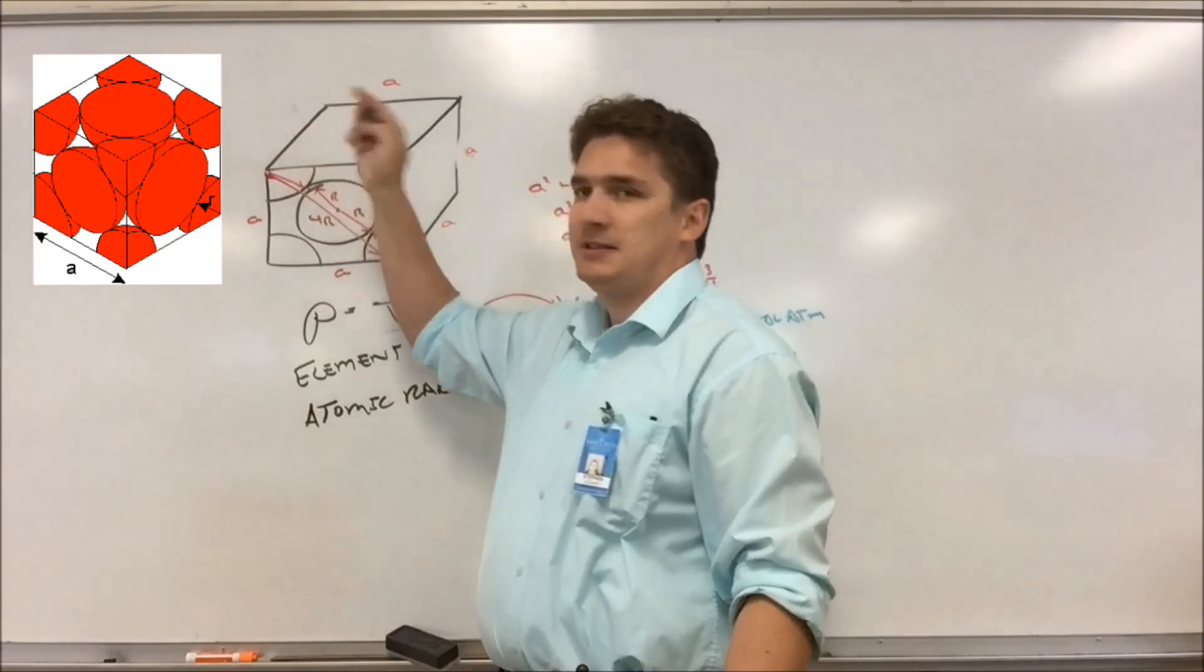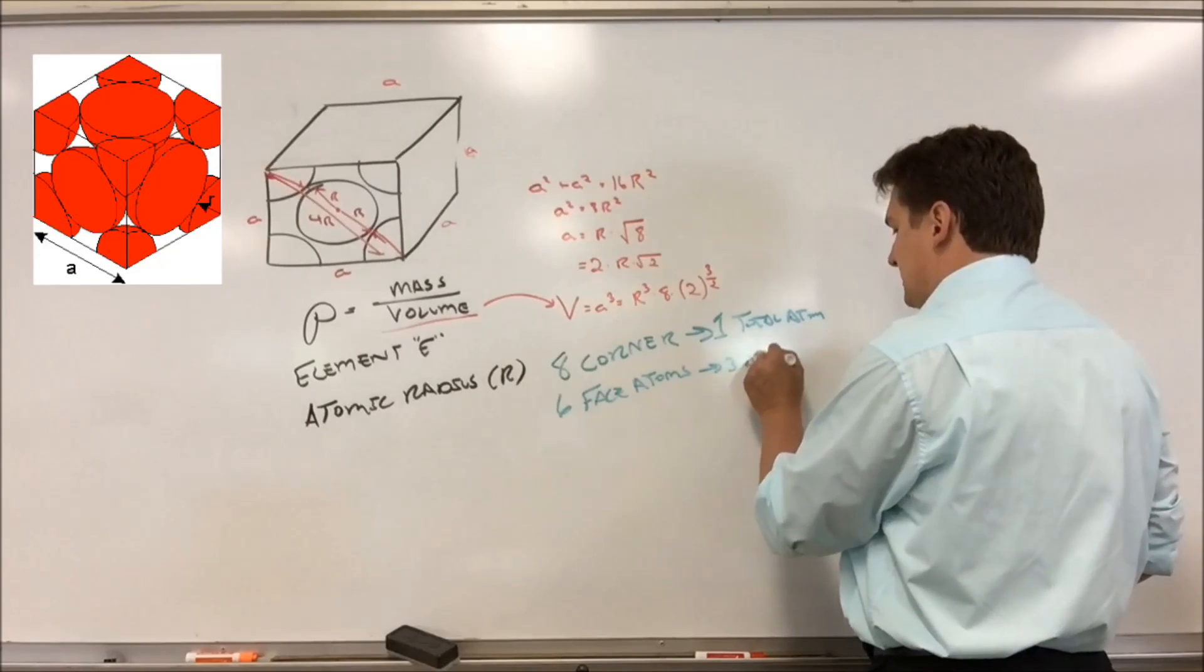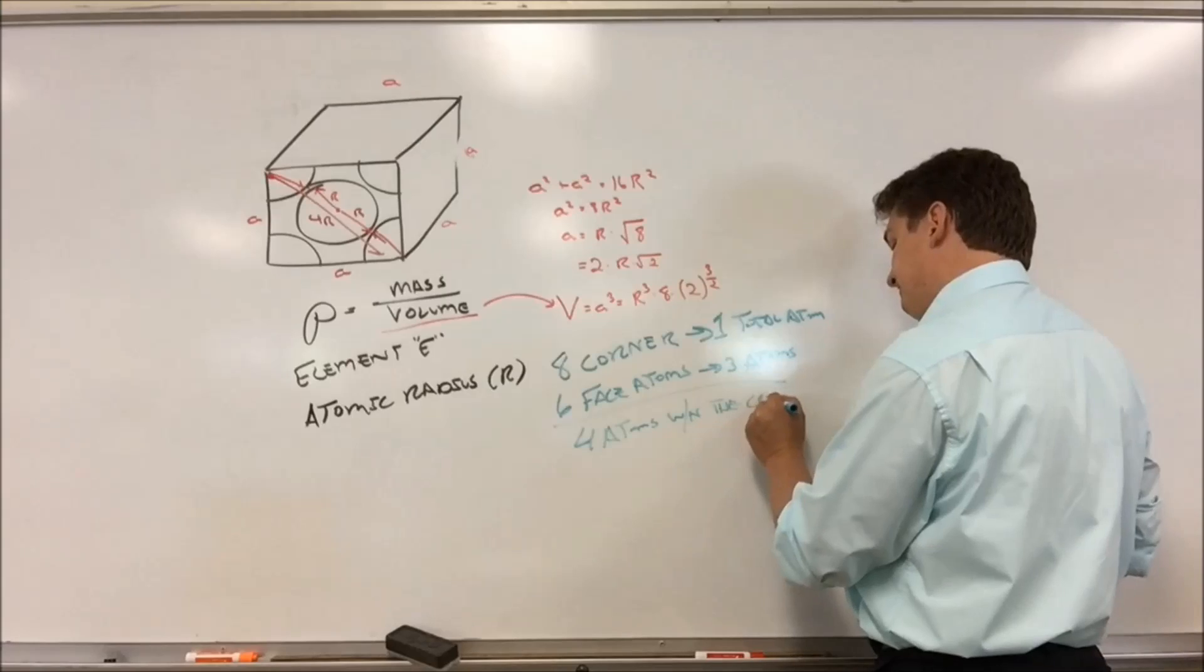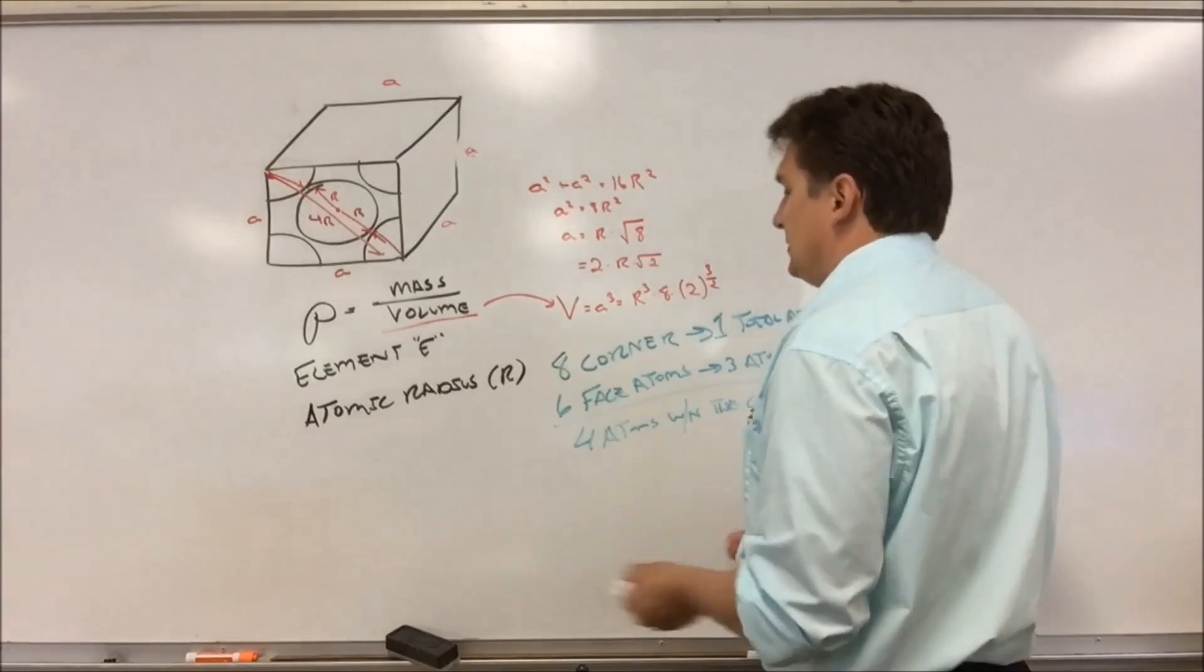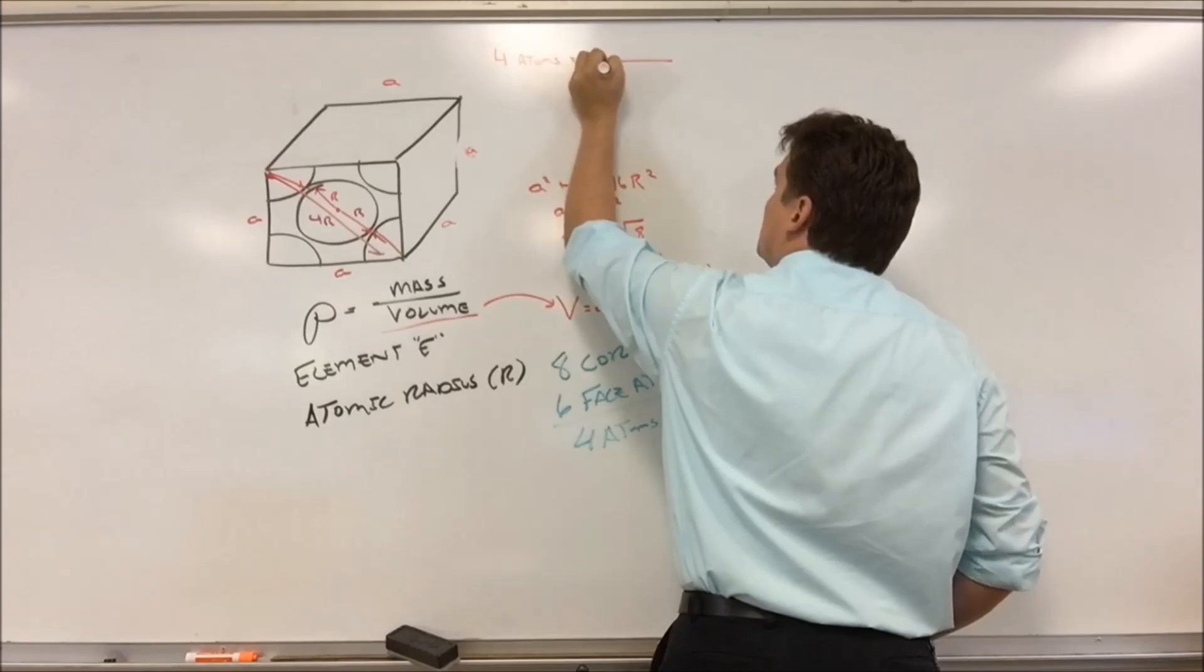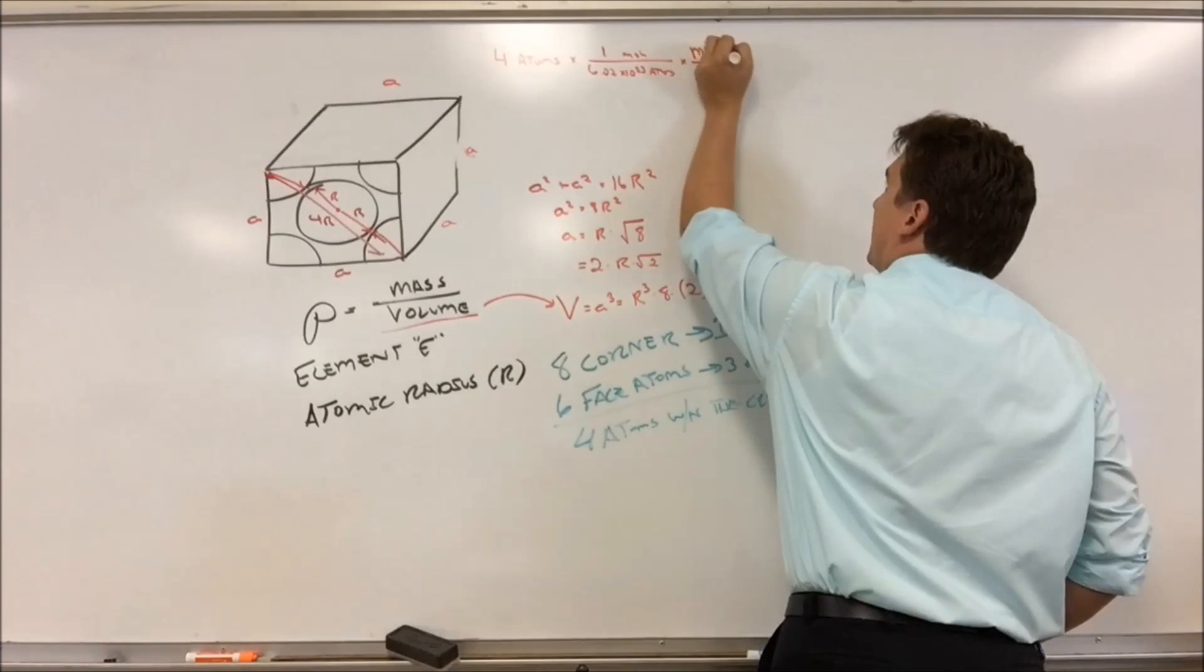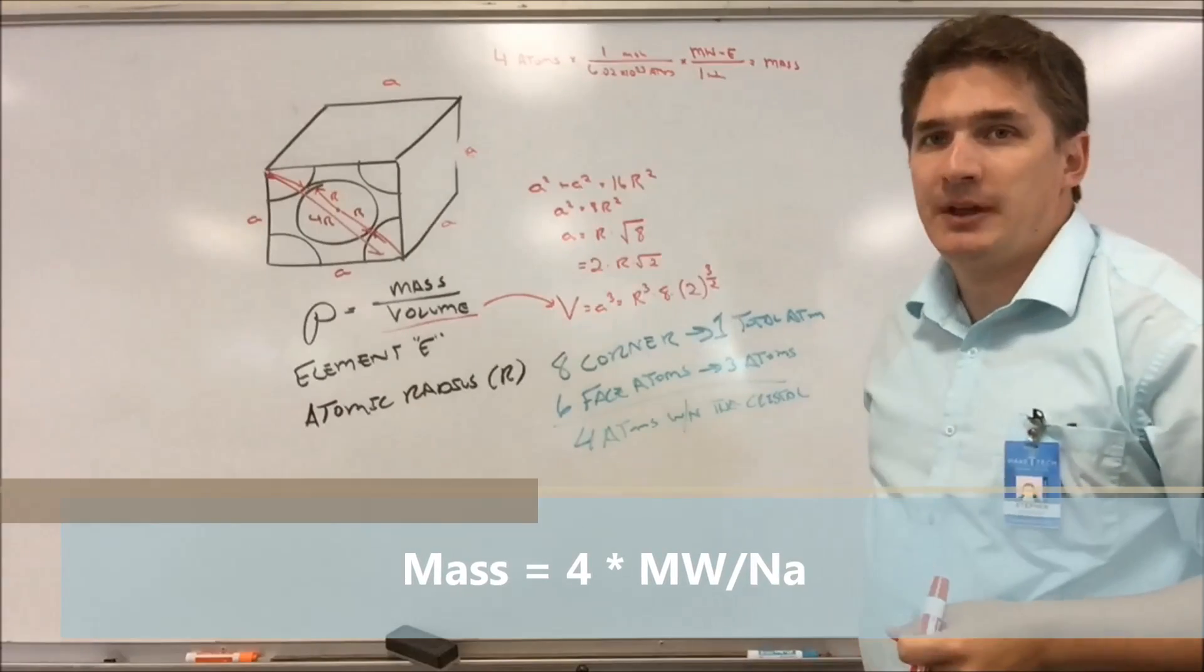Now, when it comes to the face atoms, we've got six faces. So we've got six face atoms, but only half of the atom is actually within the crystal. So really, we only get three atoms from our crystal. So this gives us a total of four atoms. If we've got four atoms and we divide by Avogadro's number, so 6.02 times 10 to the 23rd atoms per mole, and we know that for every mole of our element E we have whatever the molecular weight of element E is, this will give us our mass. So our mass is just four divided by Avogadro's number times the molecular weight of whatever the element E is.